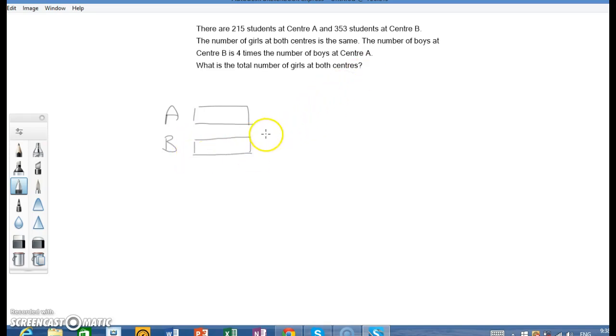Next, Centre B has got 4 times as many boys. So for the boys, Centre B I'll just draw 4 units. These are for the boys, and A would have only 1.